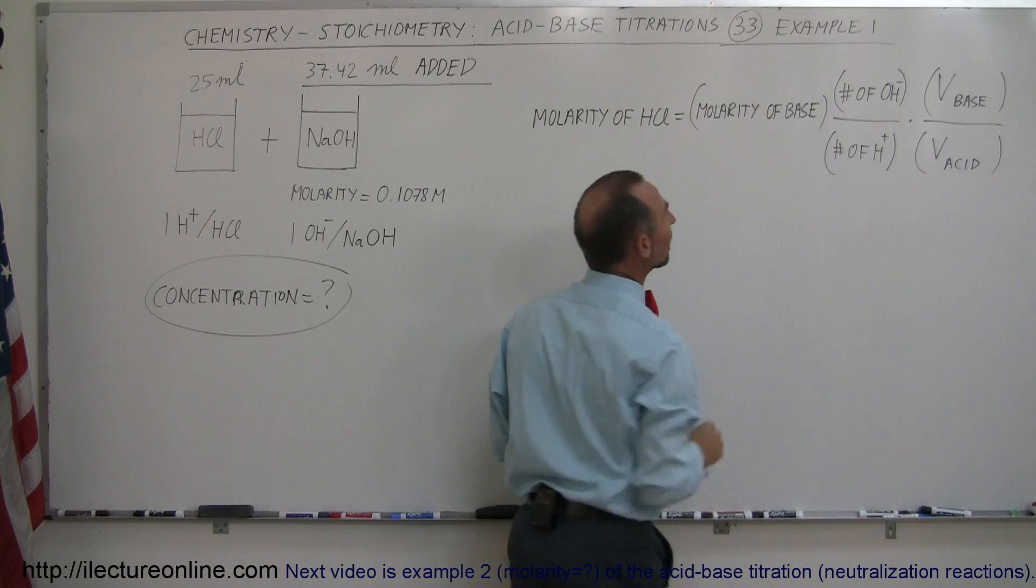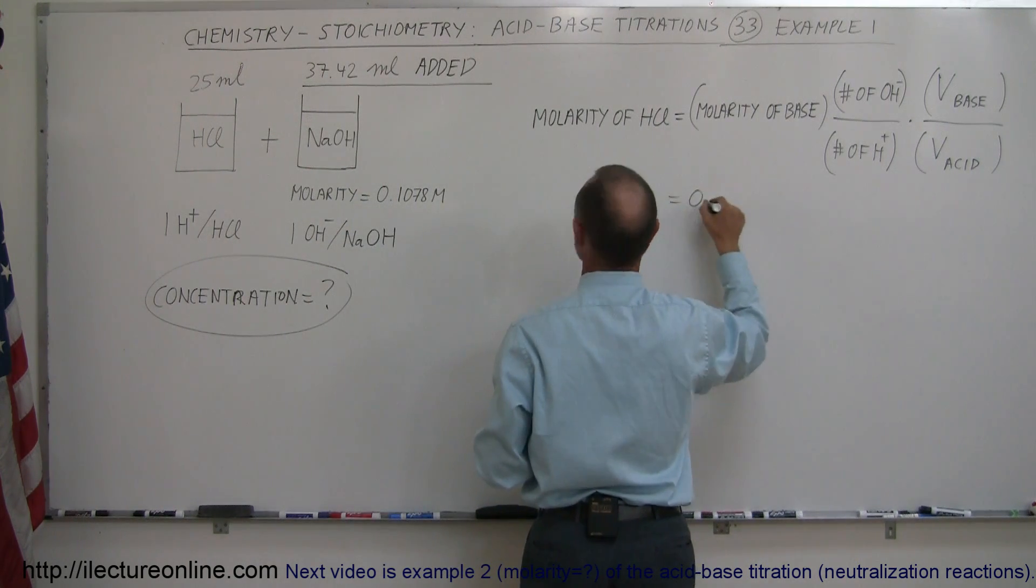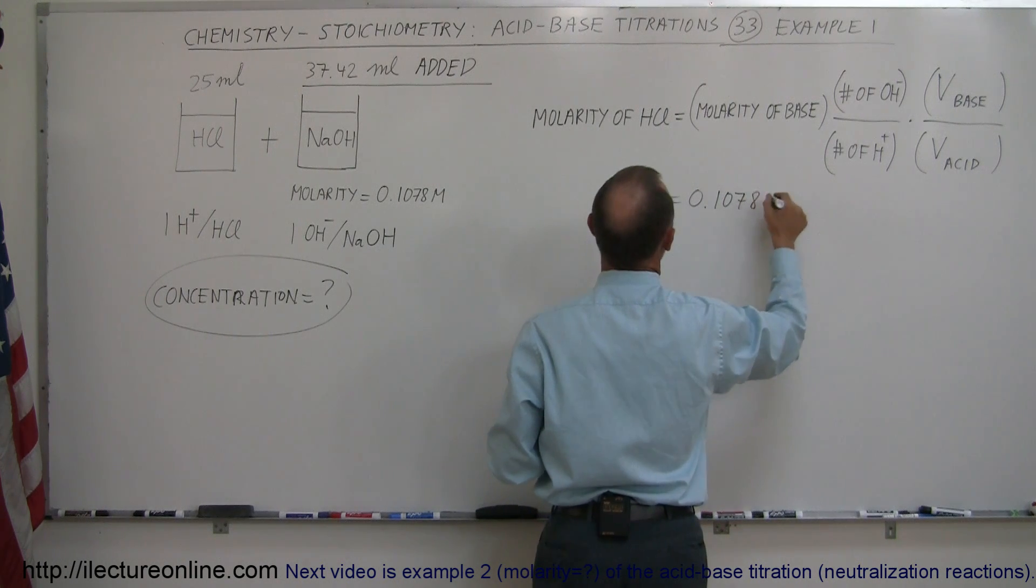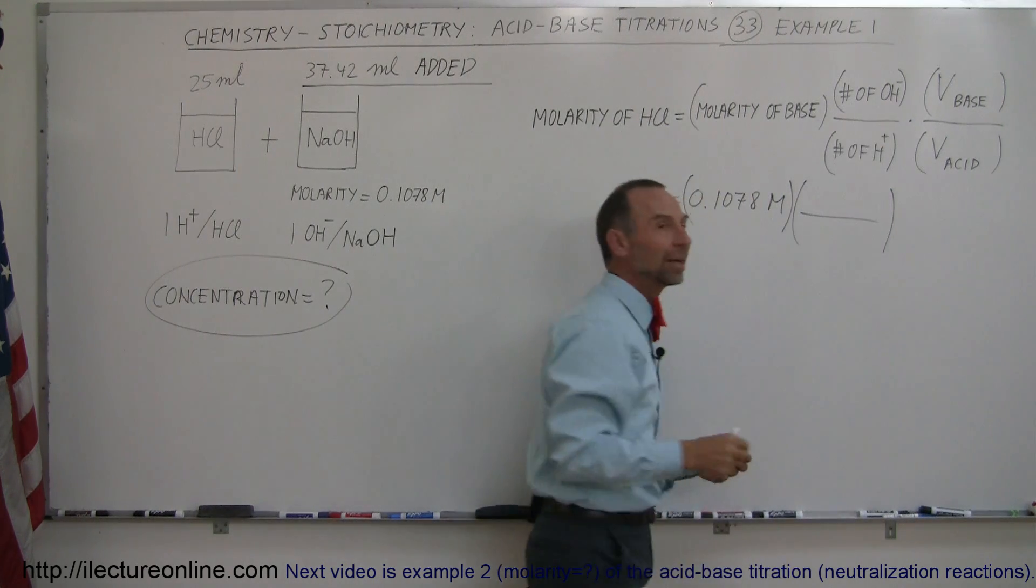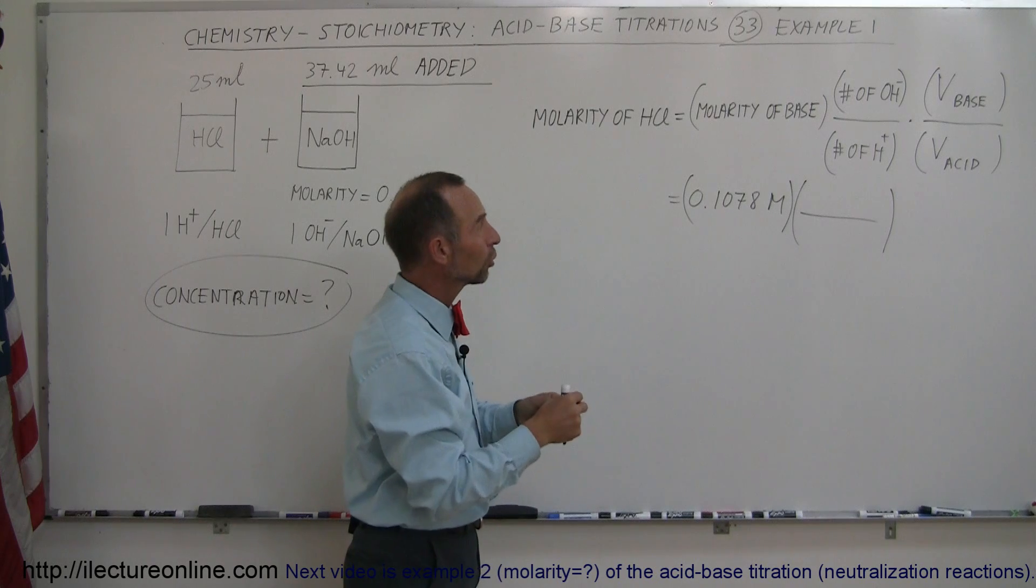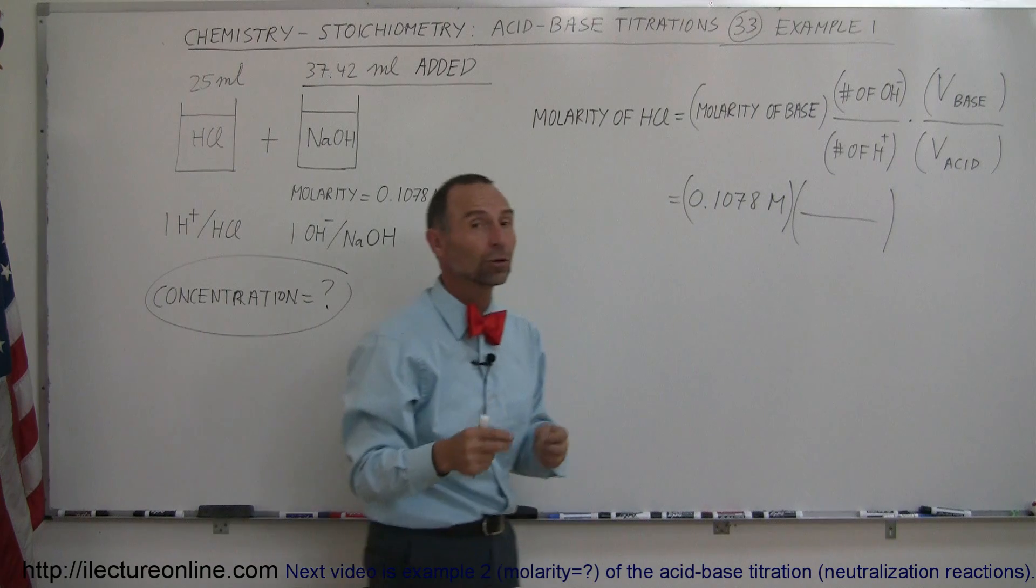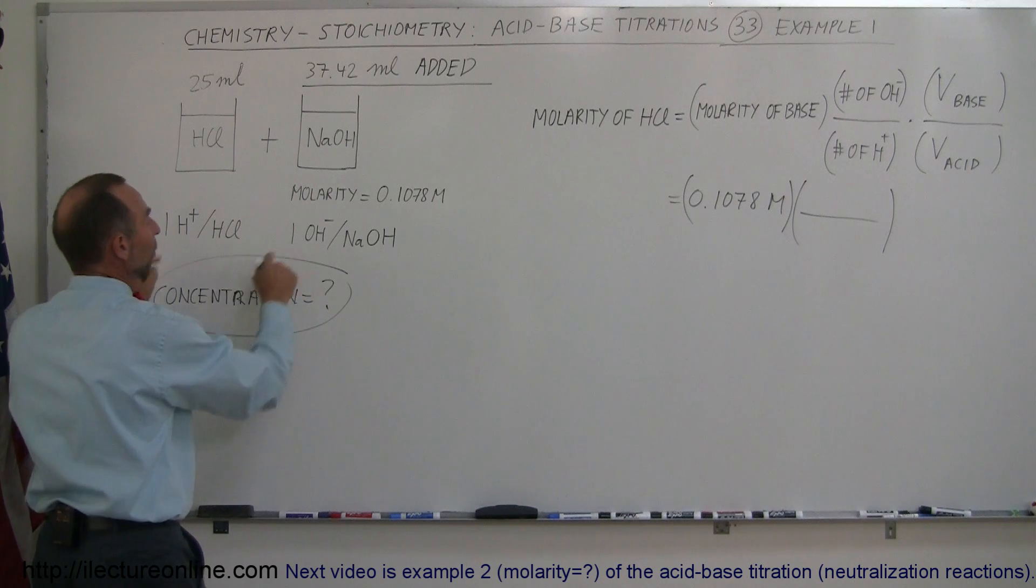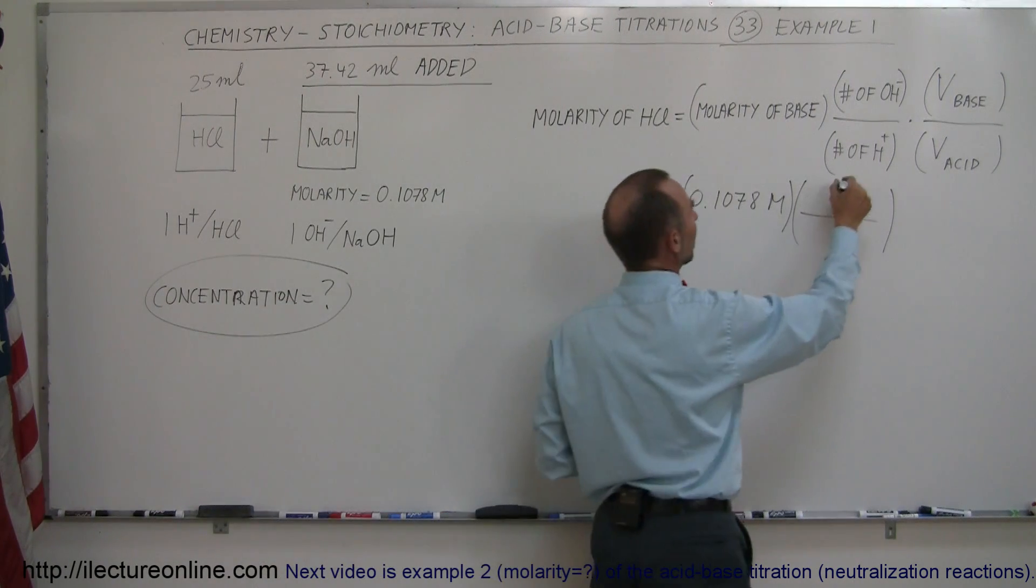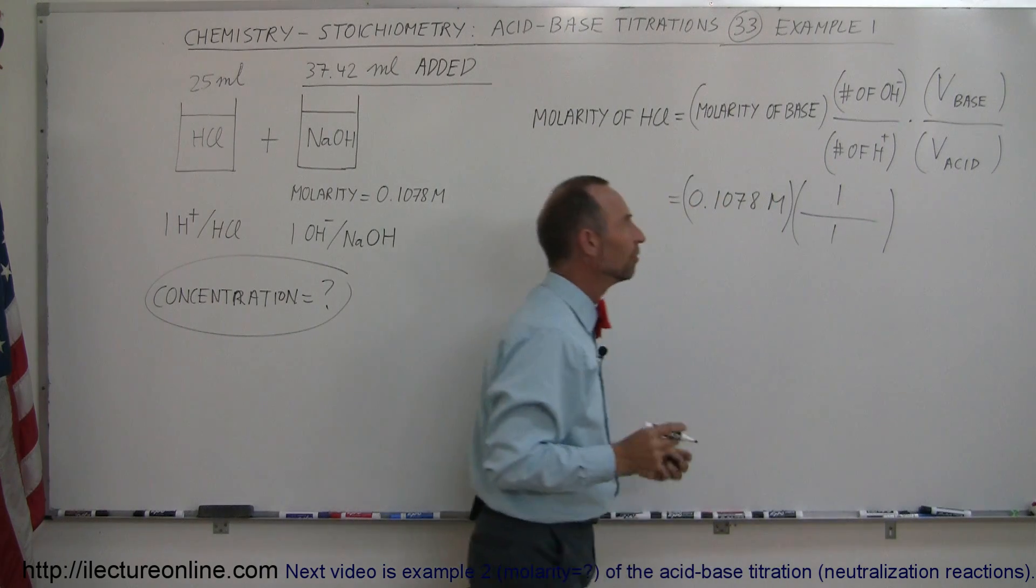we put down the molarity of the base. So, the molarity of the base here is equal to 0.1078 moles per liter. And we multiply that times the ratio of the number of hydroxide ions liberated for each molecule of sodium hydroxide and the number of hydrogen ions liberated for each molecule of the hydrochloric acid. And in this case, the ratio is 1 to 1. All right, so, 1 molecule of hydroxide ion and 1 ion of hydrogen.